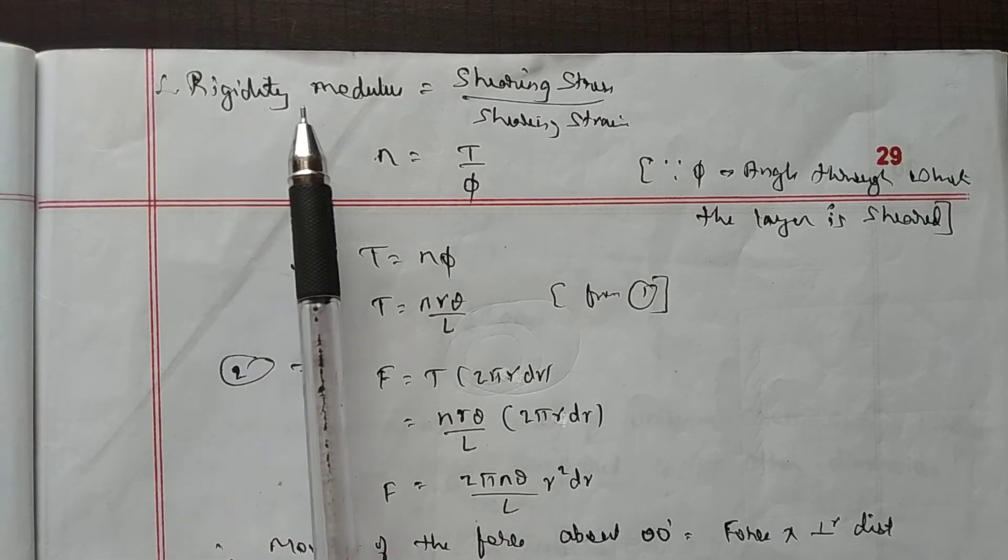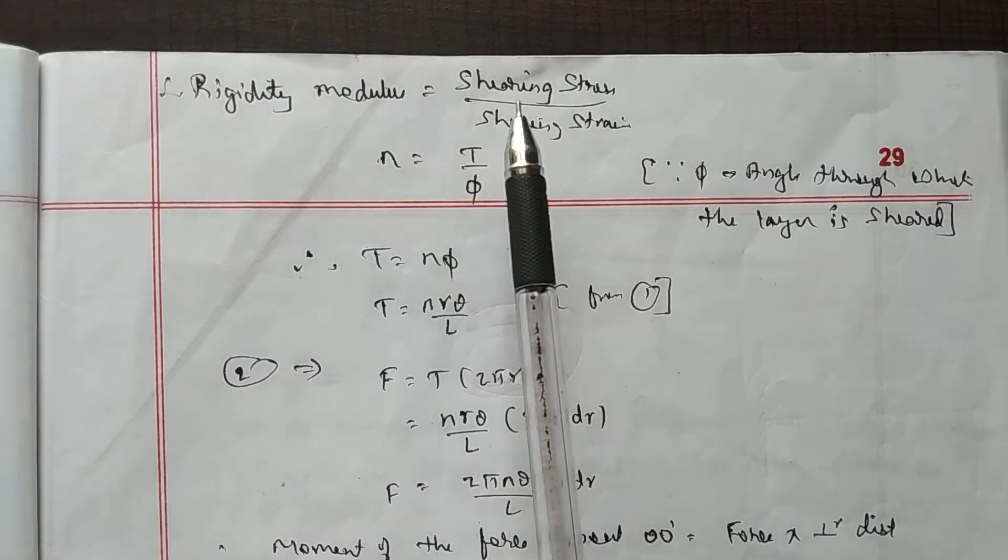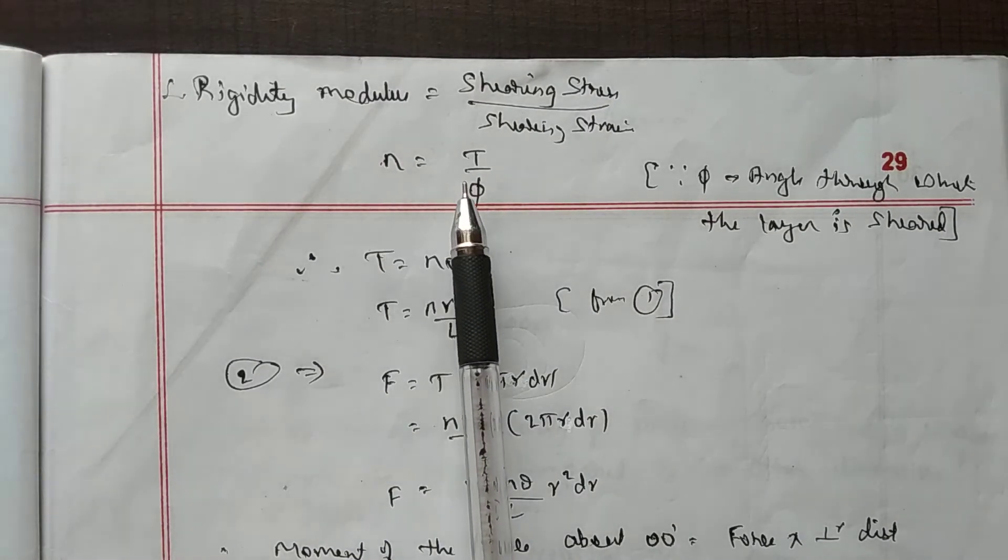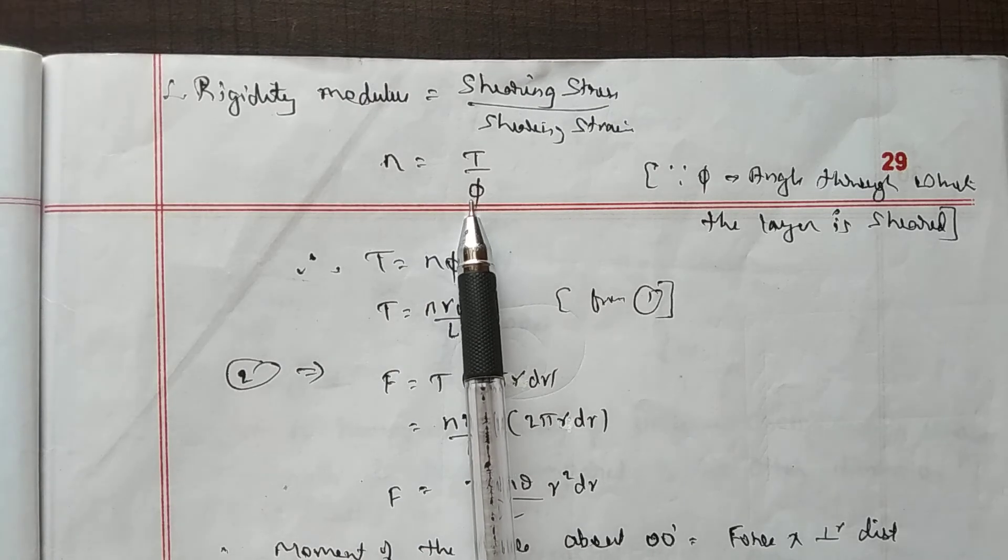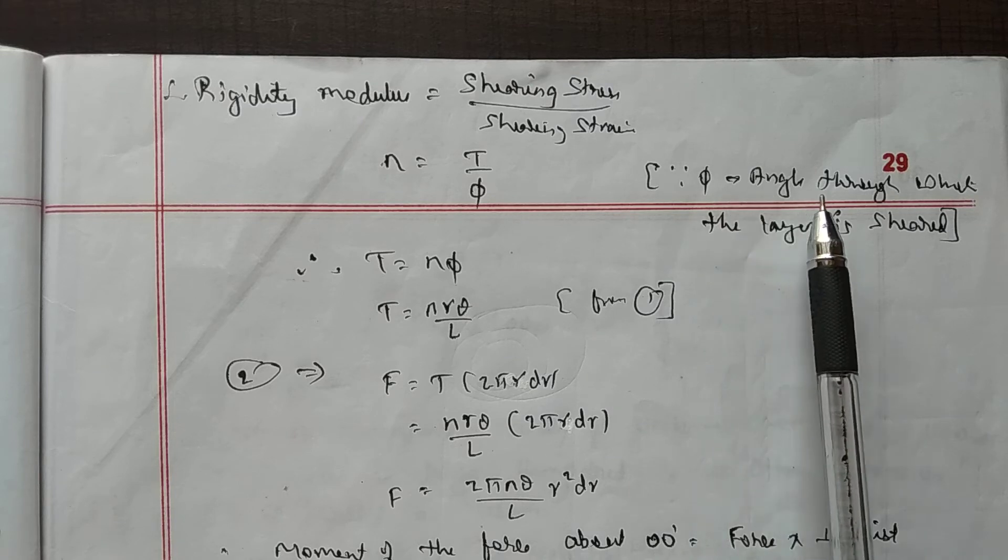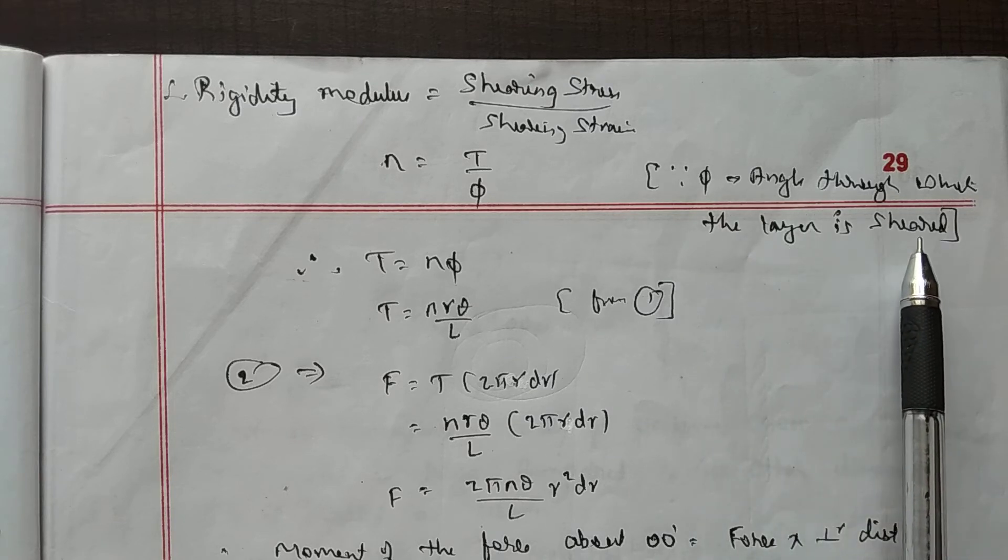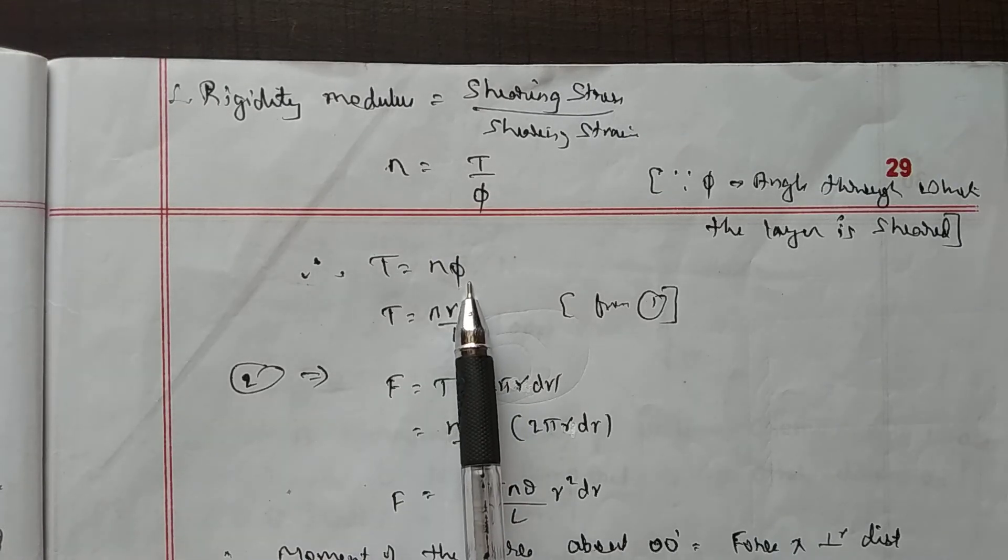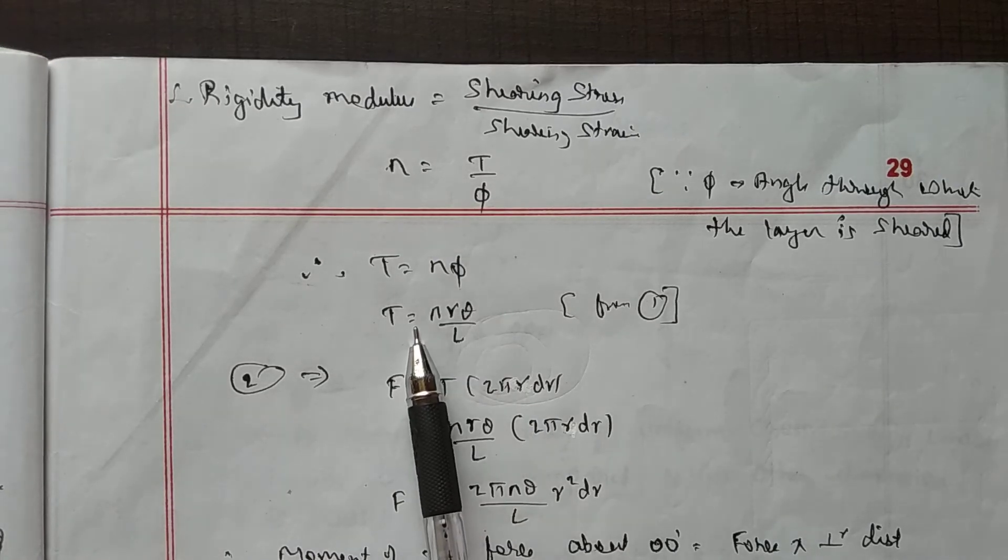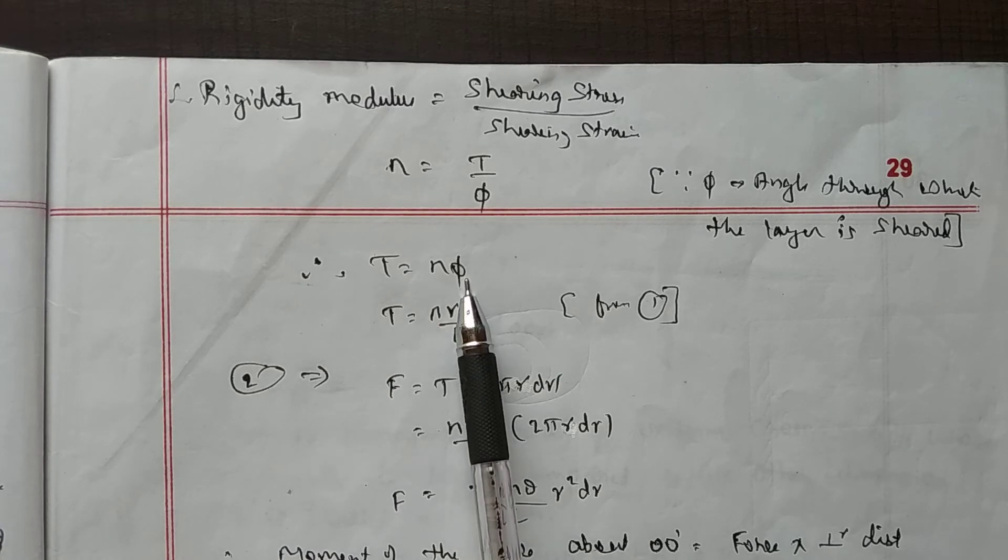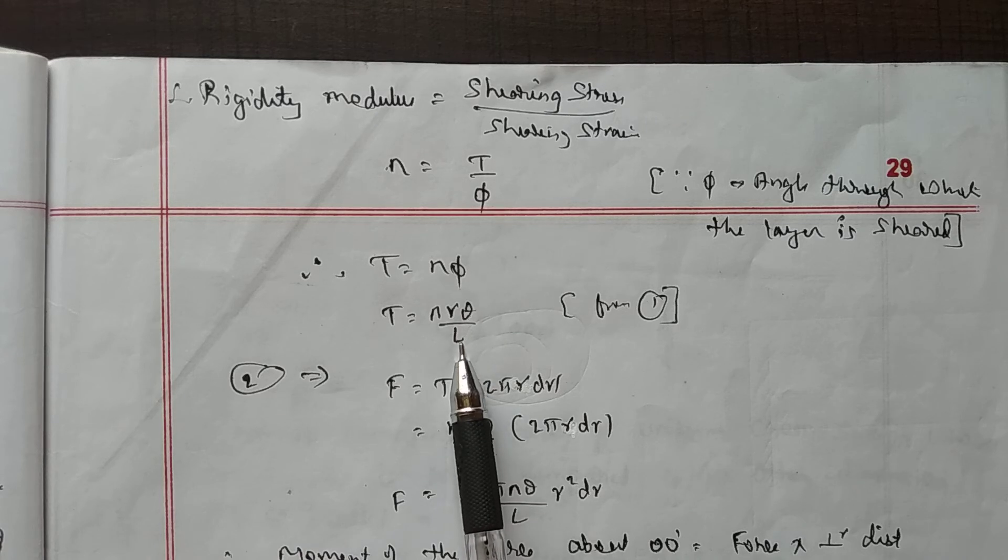Now the rigidity modulus is given by shearing stress by shearing strain. So that is N equals T by phi. That is, phi is the angle through which the layer is sheared. Therefore, T equals N into phi, or T equals N times the value of phi, which is from equation 1, that is R theta by L.